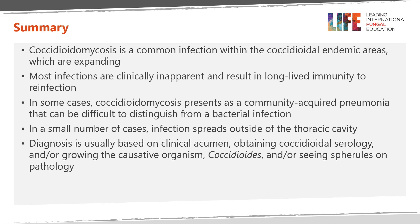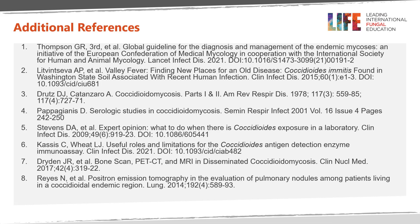In summary, coccidioidomycosis is a common infection within the endemic regions, which are expanding. Most infections are clinically inapparent and result in long-lived immunity to reinfection. In some cases, it presents as a community-acquired pneumonia that can be difficult to distinguish from a bacterial infection. In a small number of cases, infection spreads outside the thoracic cavity — extrathoracic dissemination. Diagnosis is based on clinical acumen, then by obtaining coccidioidal serology and/or growing the causative organism or seeing spherules on pathological examination. Thank you.